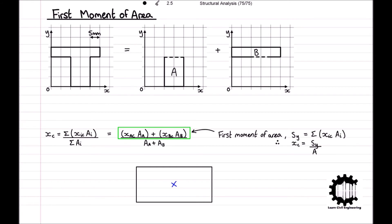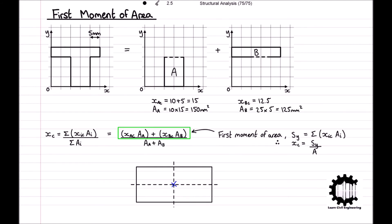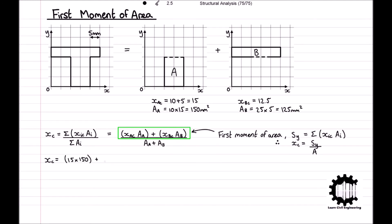The centroid of a rectangle lies along its two lines of symmetry, which is simply the center. Using this, the X coordinate of the centroid of rectangle A is 15 and the X coordinate of the centroid of rectangle B is 12.5. The area of rectangle A is 150 mm² and the area of rectangle B is 125 mm². Substituting into our equation: XC = (15 × 150 + 12.5 × 125) / (150 + 125) = 13.9. So the centroid of the entire section is 13.9 millimeters away from the Y axis.